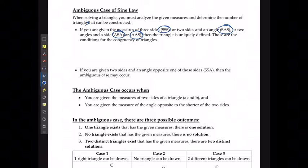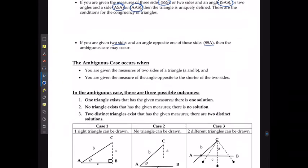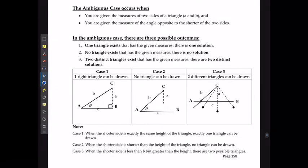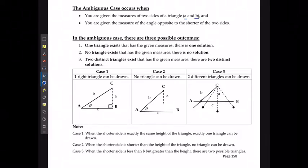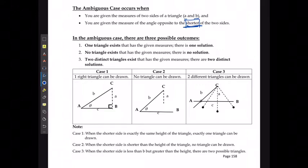If you're given two sides and an angle opposite one of the sides, then the ambiguous case may occur. For the ambiguous case, that means you're given two sides A and B, and an angle opposite the shorter of the two sides. If the angle is opposite the longer side, there's only going to be one possible triangle anyway, so it has to be the shorter of the two.